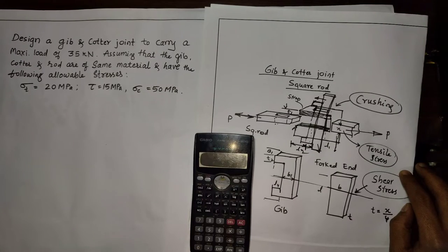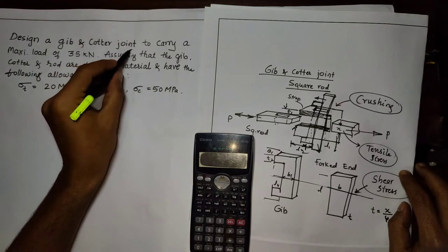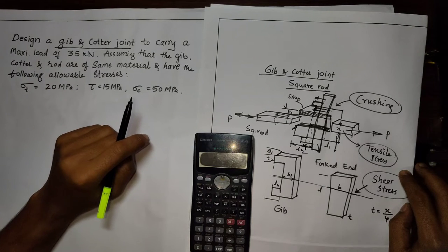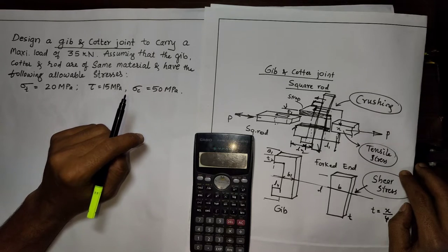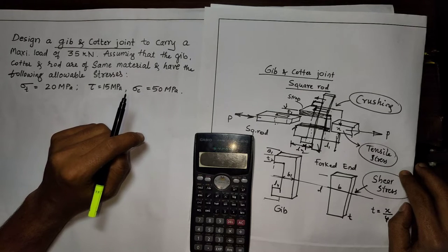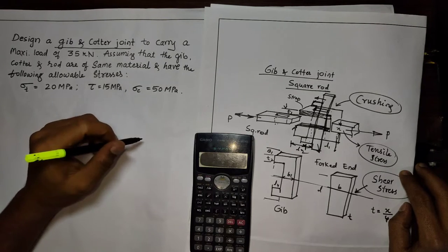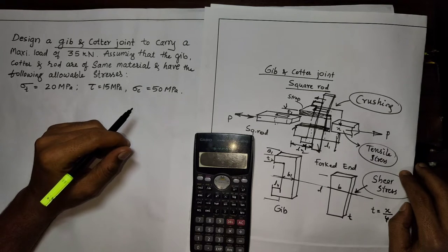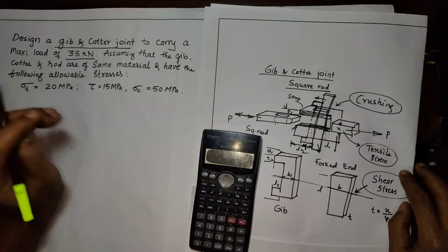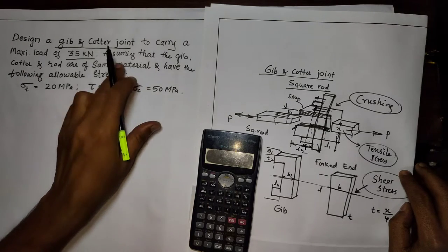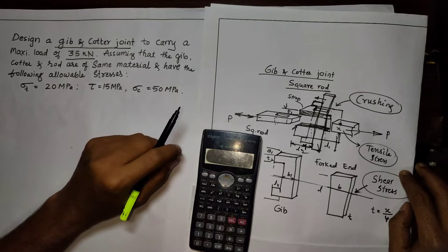Welcome back. Now we are going to design the gib and cotter joint. In the previous video I explained the different components and their joints. Today we learn how to design the gib and cotter joint. The given maximum load is 35 kilo Newton, and we assume it is a tensile load.